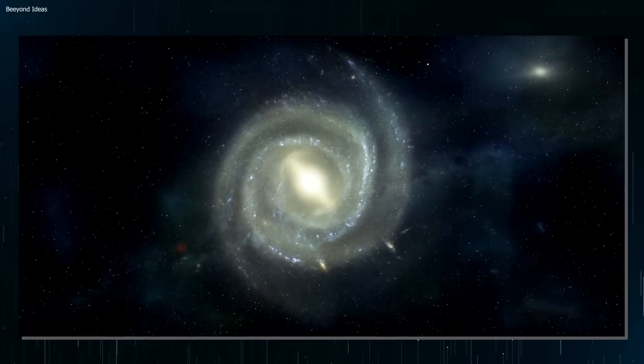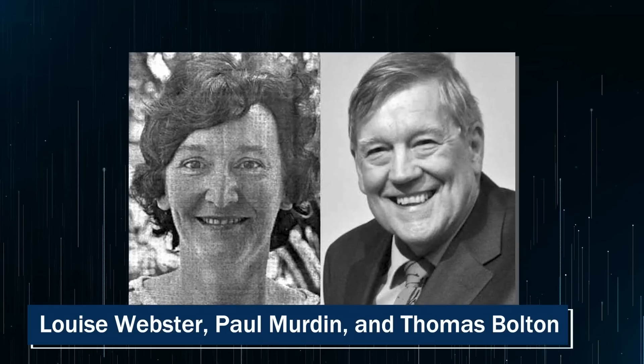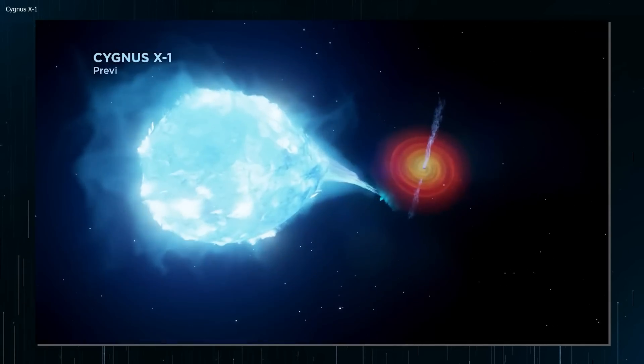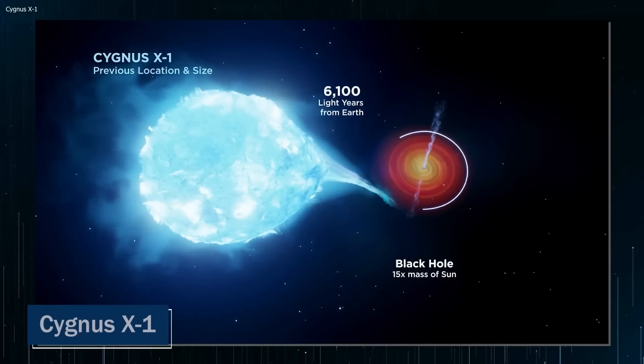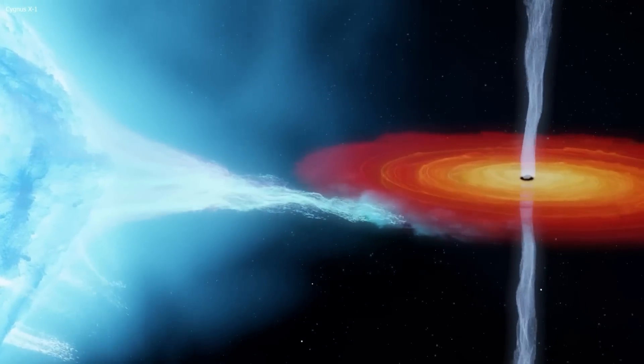This prediction was confirmed in the early 1970s, when astronomers Louise Webster, Paul Murdin, and Thomas Bolton observed an invisible object orbiting a blue star from 6,000 light-years away. The object was codenamed Cygnus X1 and is regarded as the first black hole to be identified.